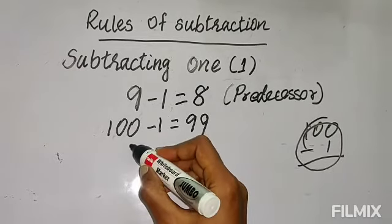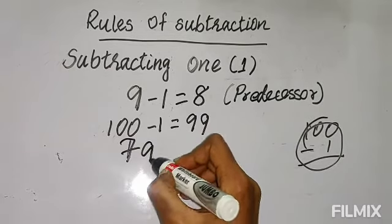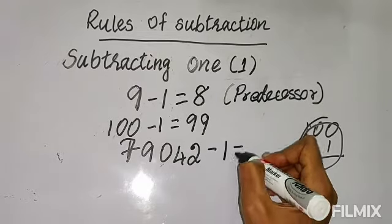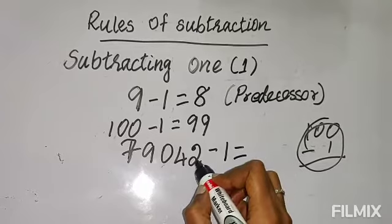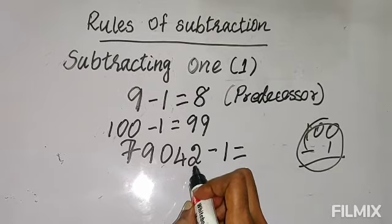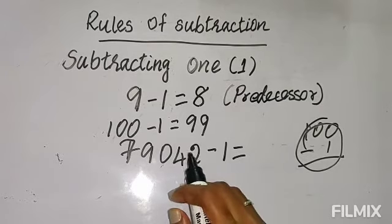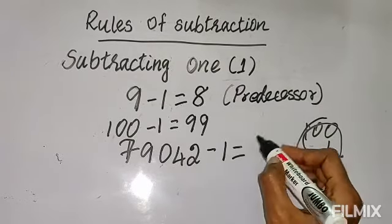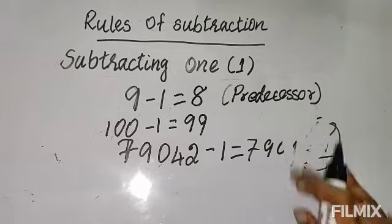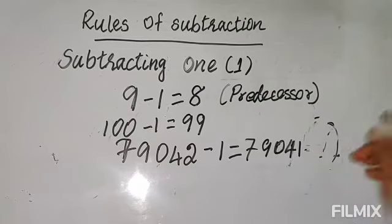It can be any bigger number. For a 5-digit number, if you minus 1, you find the predecessor by observing the digit in the ones place. Here, 2 is in the ones place, so the predecessor of 2 is 1. Therefore the answer is 79,041. That is the answer for the second rule.